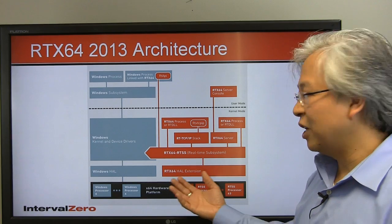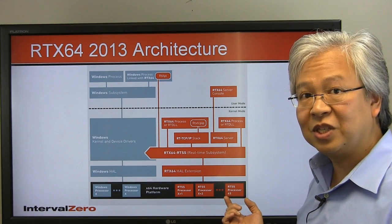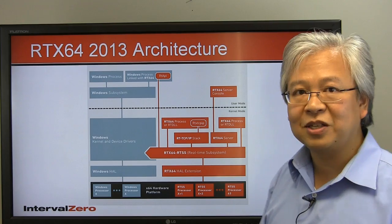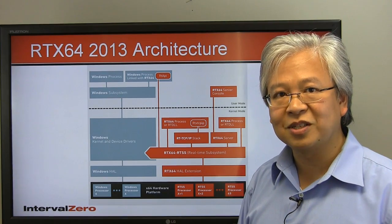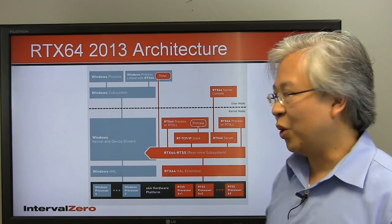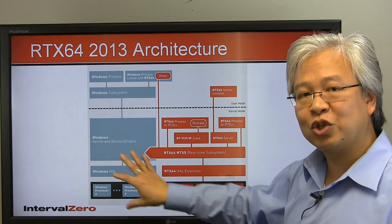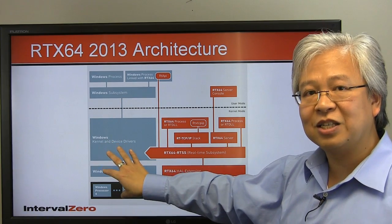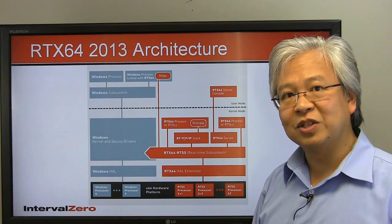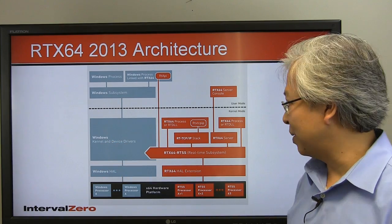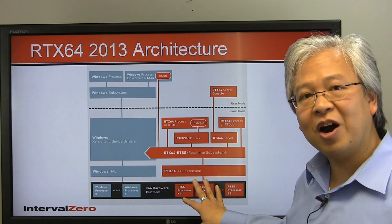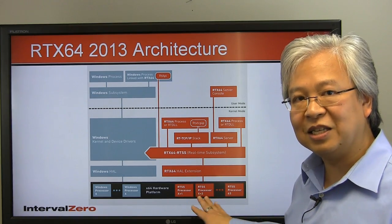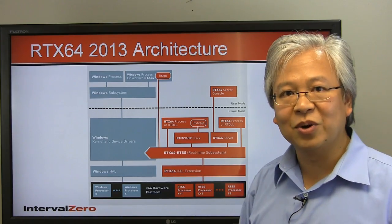RTX 64 supports up to 63 real-time processors on a 64-core system. So it's transforming Windows — in this case 64-bit Windows — into a real-time operating system, with hard, dedicated real-time processing running on dedicated cores.